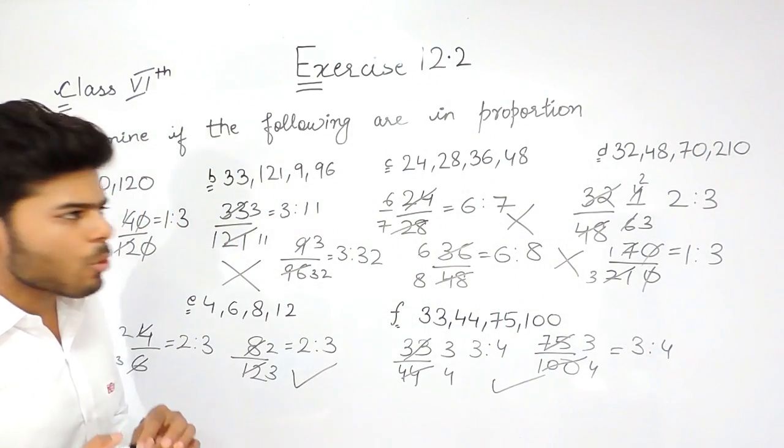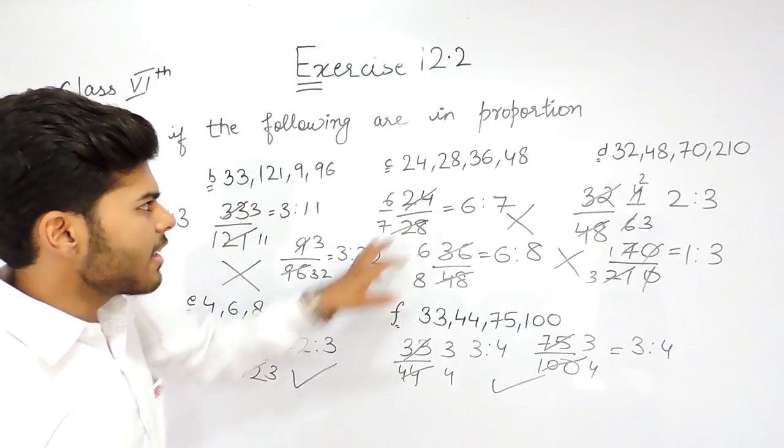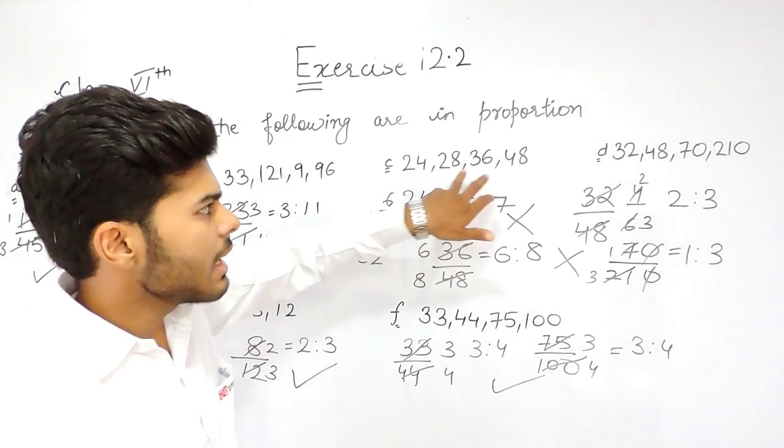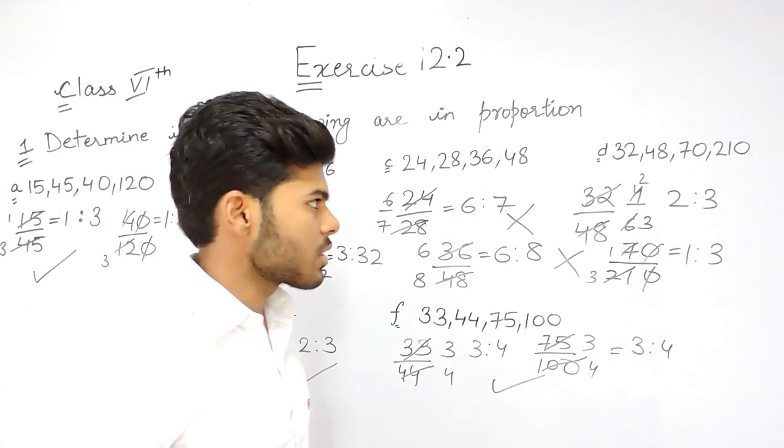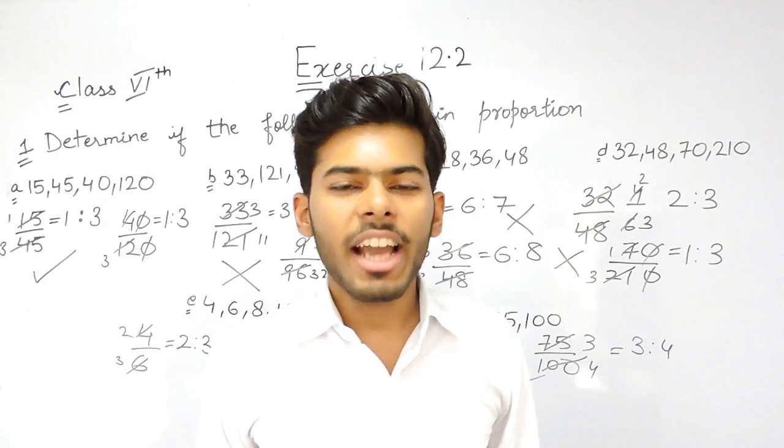So basically to check proportion, we just need to check whether the ratio of first two numbers equals the ratio of the other two numbers. This is how we can solve this question. Thank you.